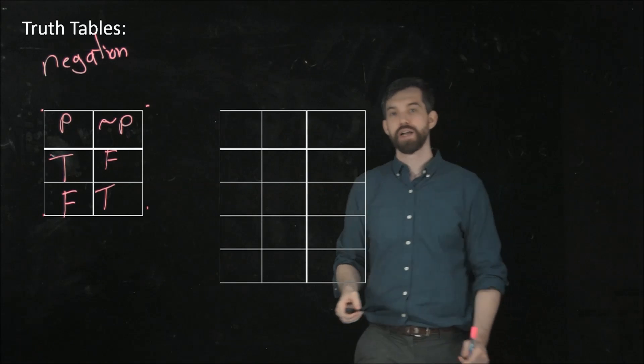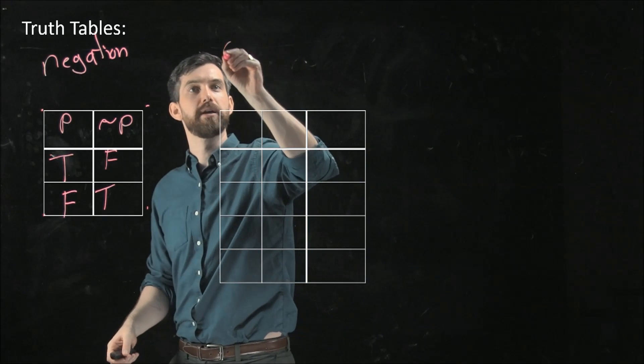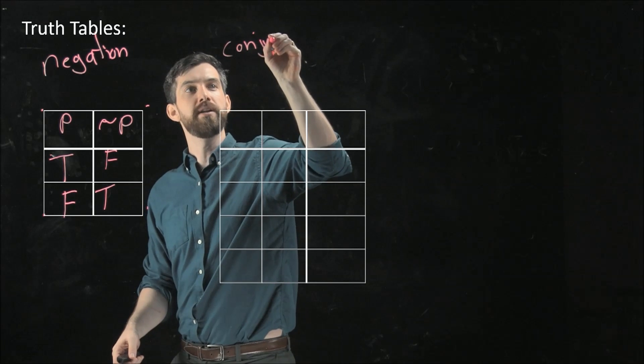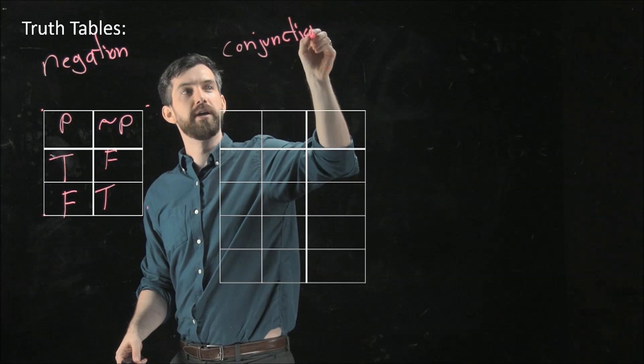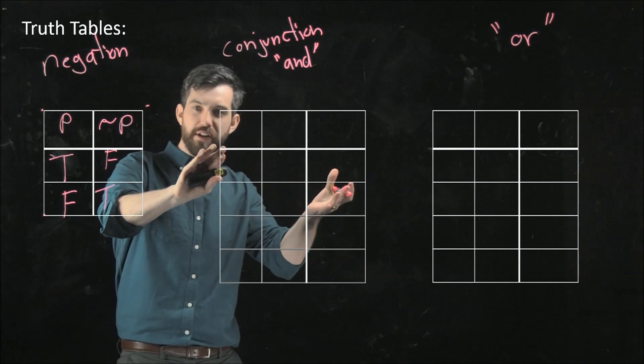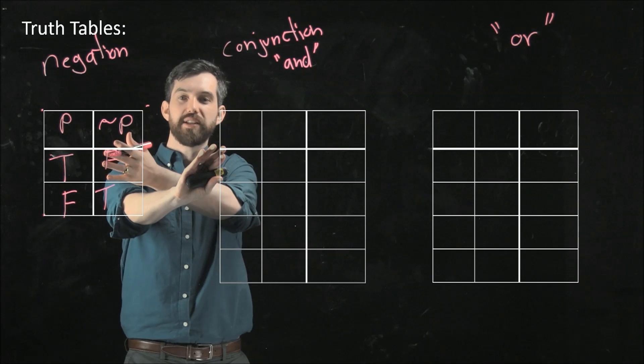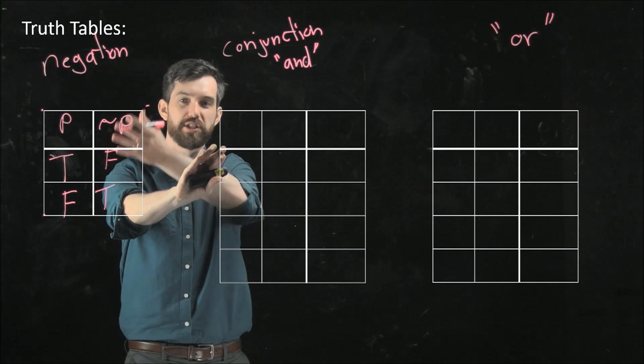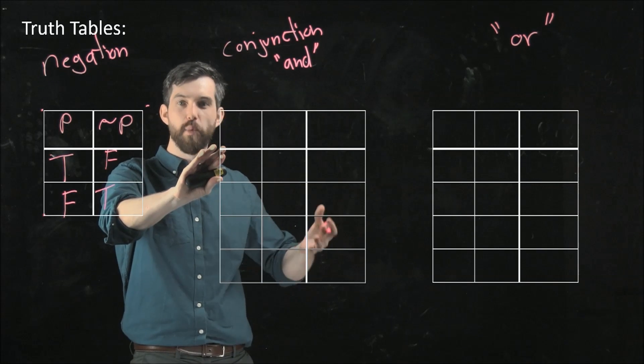All right. So let's look at one of the other ones. I'm going to do conjunction next. Conjunction is my fancy word for and. So now if I want to fill in this table, in the first case there was only going to be just two different columns, one for p and one for this output.